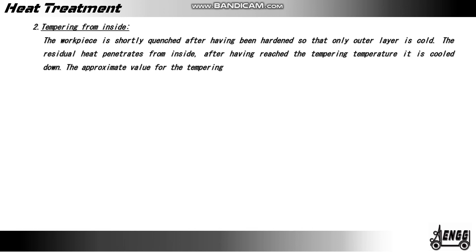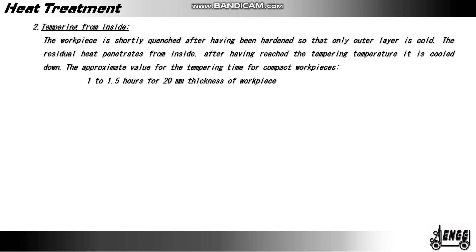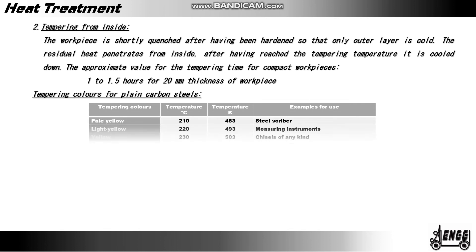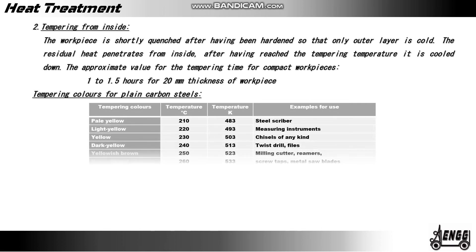The approximate value for the tempering time for compact workpieces is 1 to 1.5 hours for 20 mm thickness. The below table shows tempering colors and temperatures for plain carbon steel along with particular uses and hardness values.